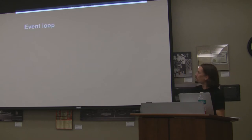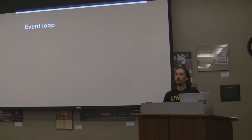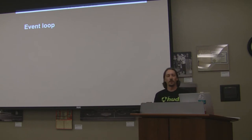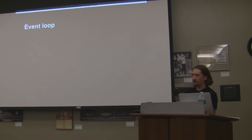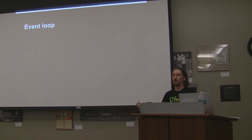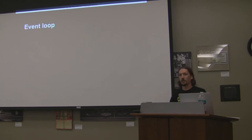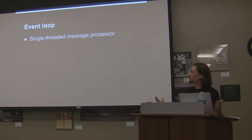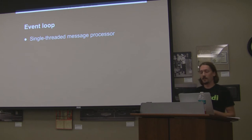Consider a traditional multi-threaded application running on a JVM — you'd have a bunch of threads, some doing computation, others blocking on network calls. Execution can continue as long as you've got free threads. But Node's core is an event loop — a single-threaded message processor. It executes your code one at a time, very fast. The key is that it's only executing your code, not blocking on I/O.